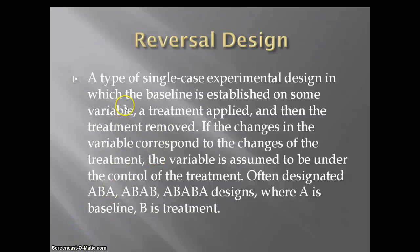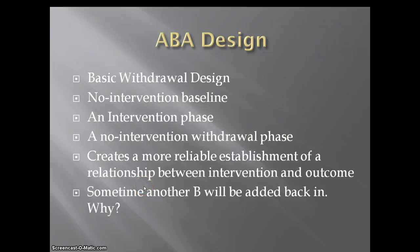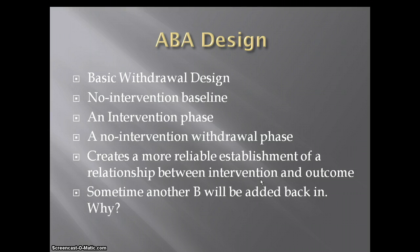A more extensive type is the reversal design — still a single case experimental design. You establish a baseline, apply treatment, and then the treatment is removed. The change in the variable corresponds to the change in treatment, so the variable is assumed to be under control. There is a no-intervention phase, an intervention phase, and then the intervention is removed to see what happens. This creates a more reliable relationship between the intervention and the outcome — if you remove it and see something change, you can more readily say that what you're doing is making the difference. That's an ABA design.